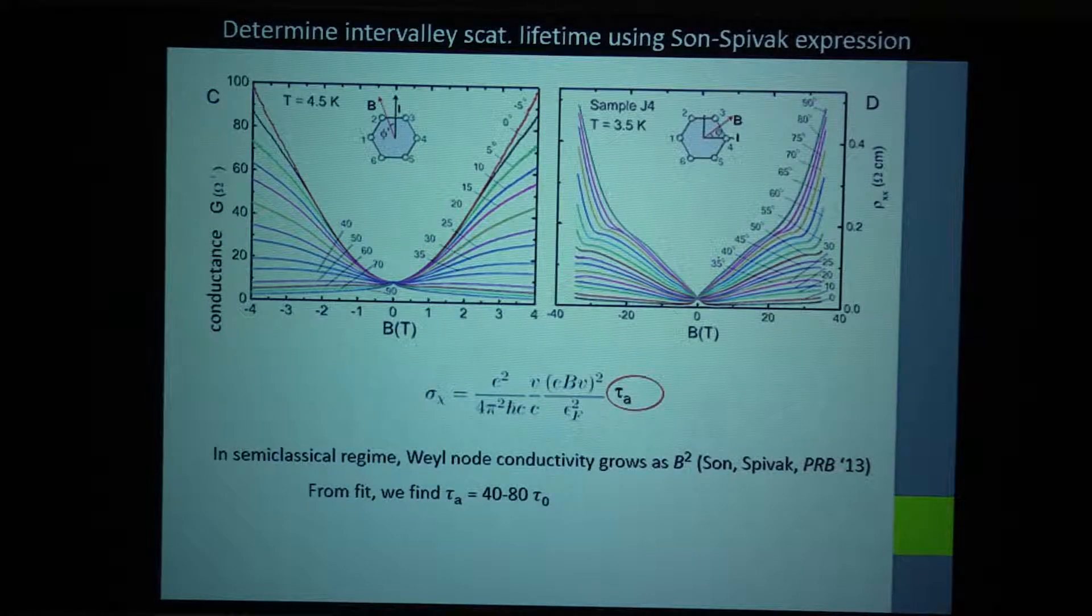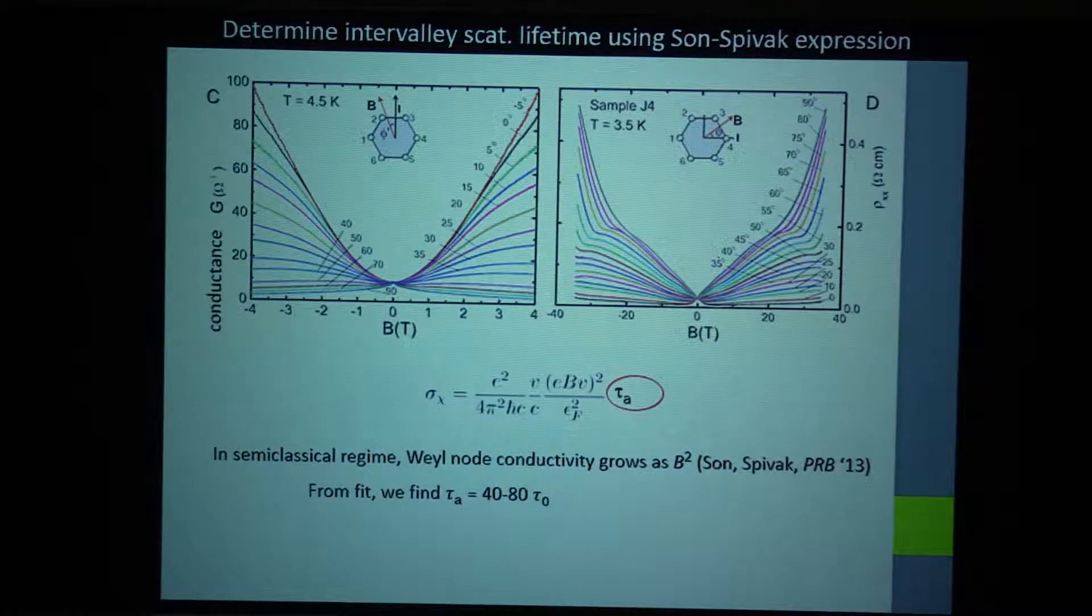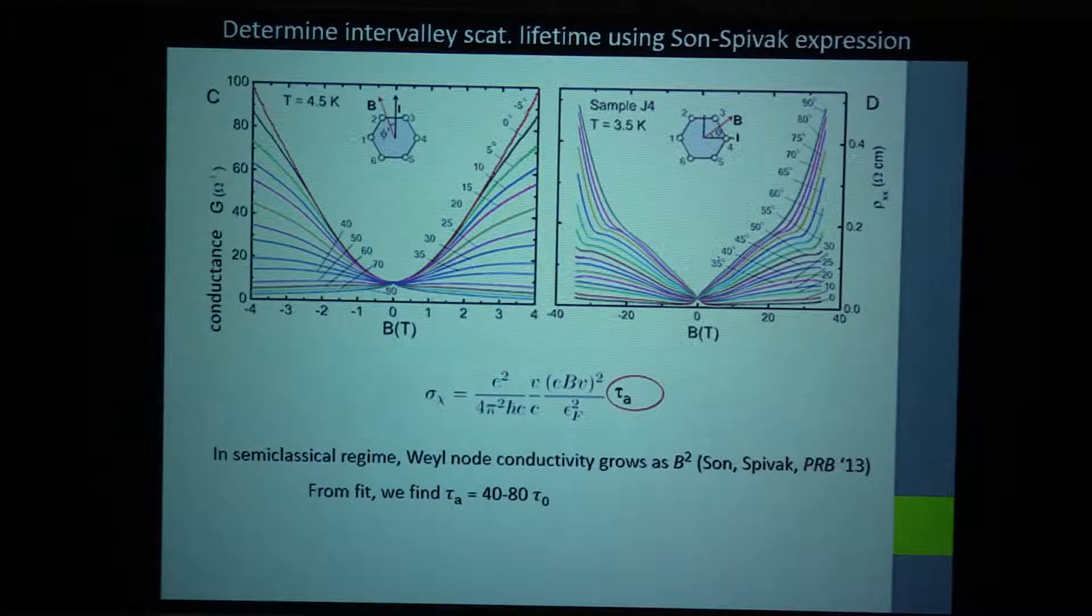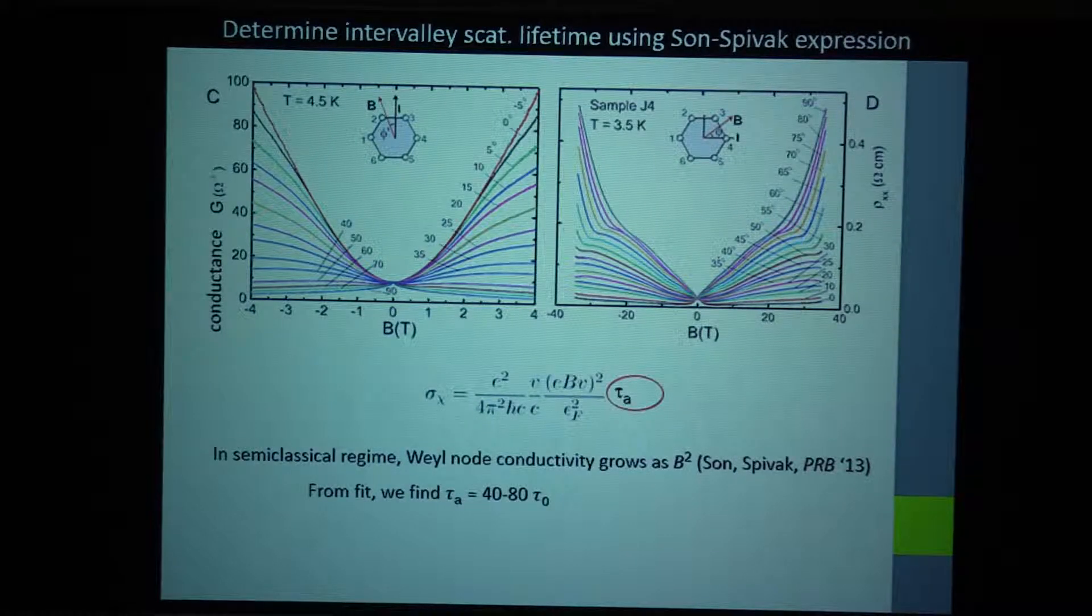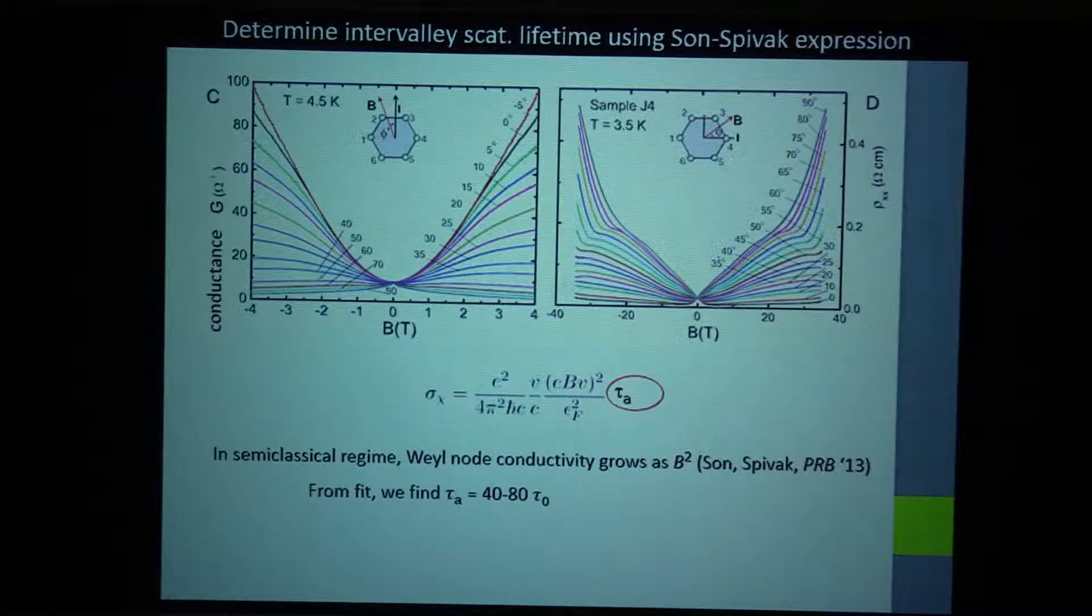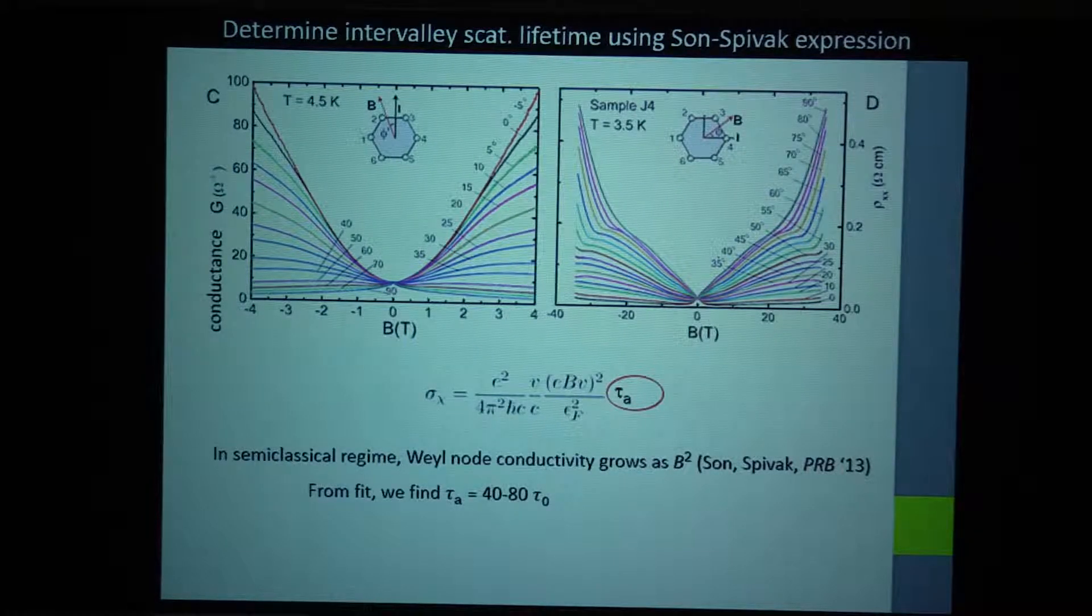But at the alignment at zero degrees, it seems to be immune from that. It doesn't see that. So this is a phenomenon of the component of the field along the z-axis. That's for future work to explore.